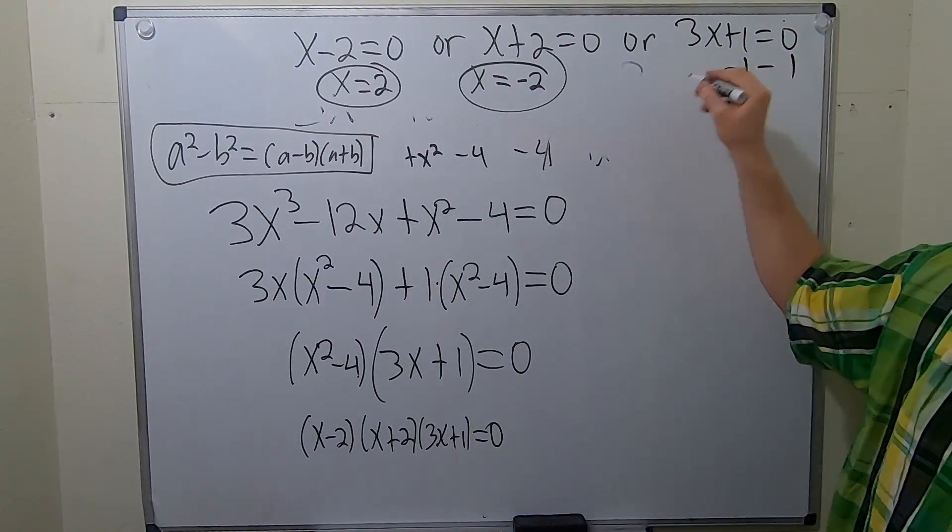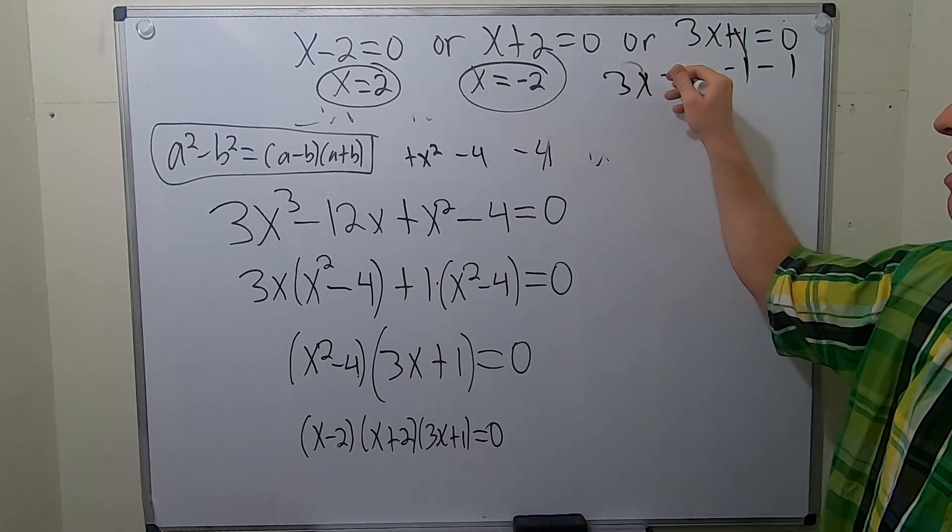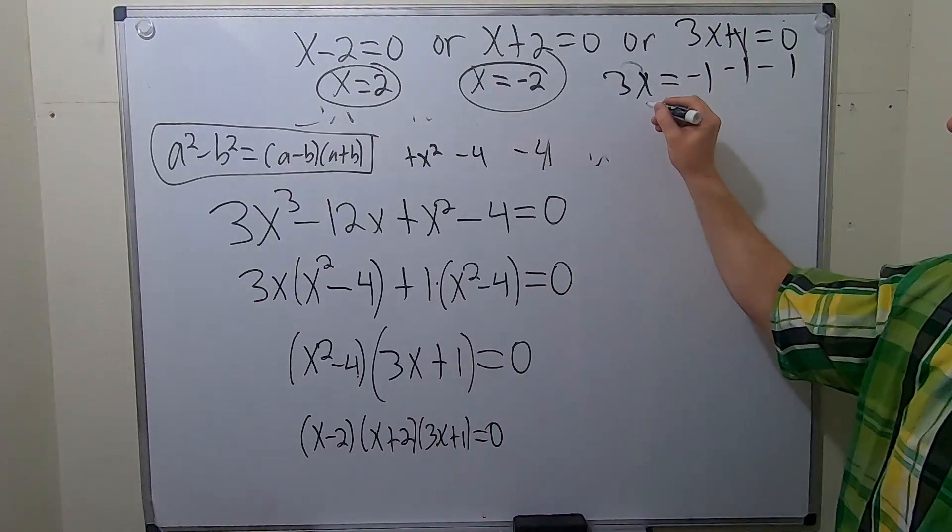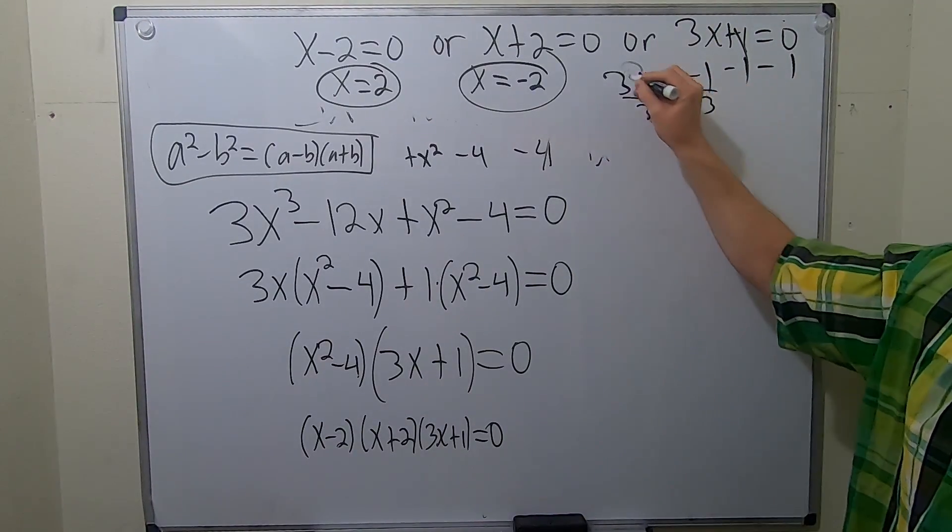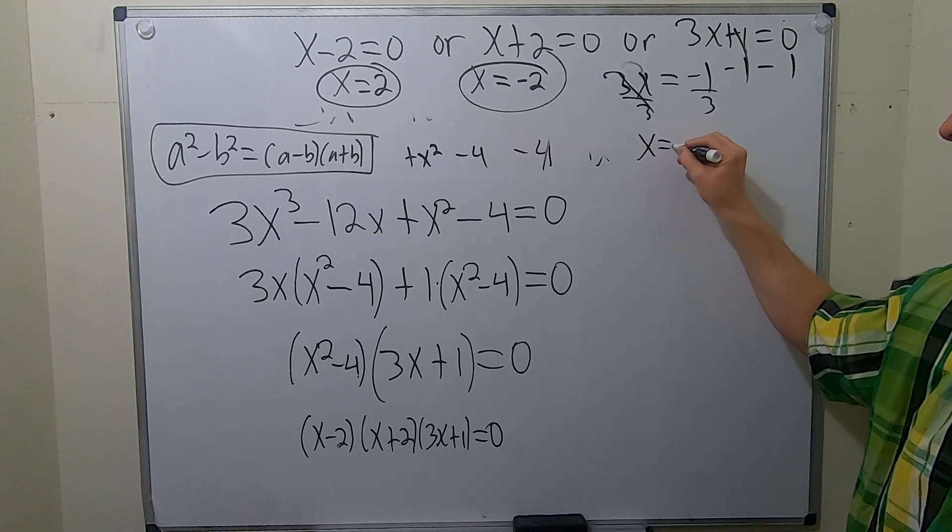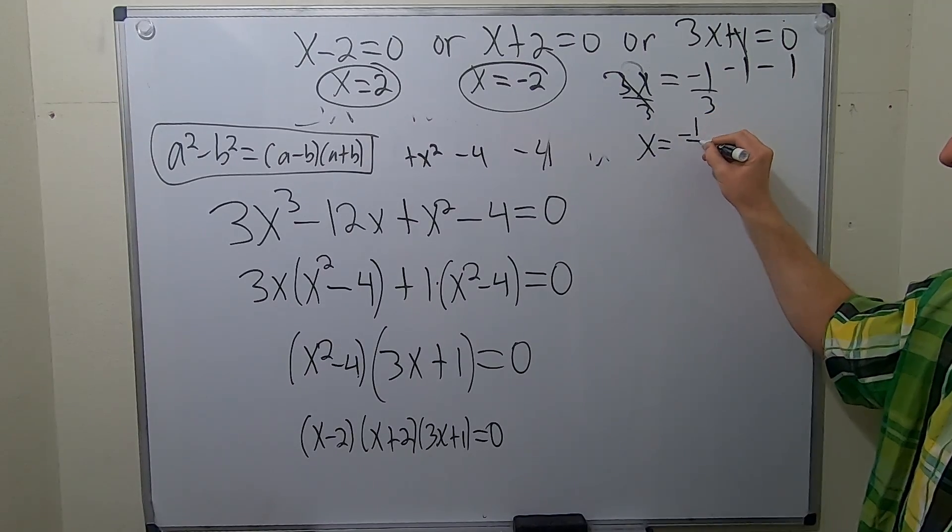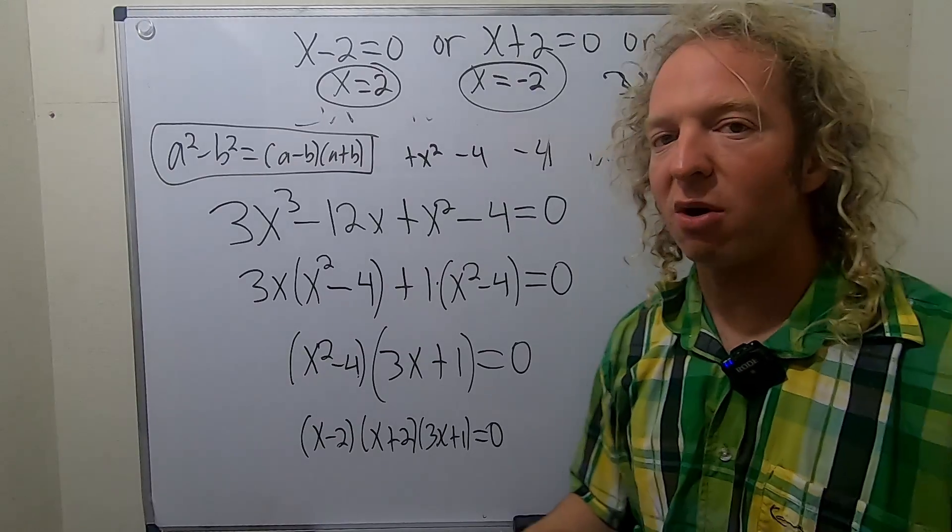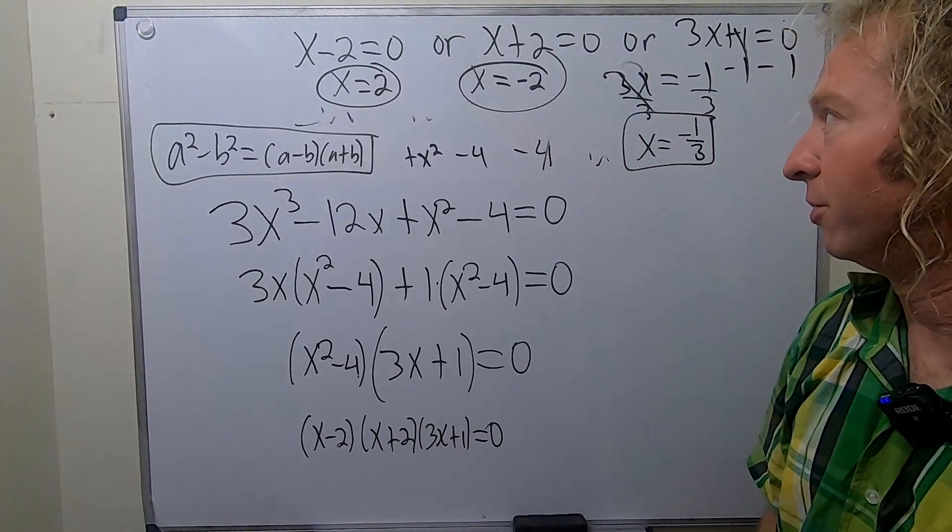Here, you can subtract 1. So you get 3x equals negative 1. And then you divide by 3. And that will give us, I'll show the step, x equals negative 1 over 3. And that is the answer to our original polynomial equation.